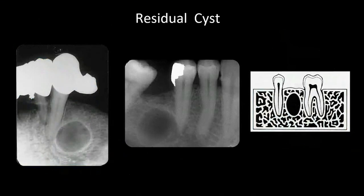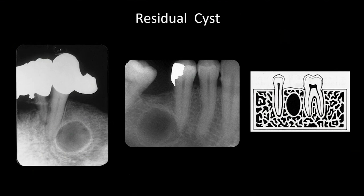Here's a beautiful example of a residual cyst. When a tooth is extracted but a radicular cyst is left behind, it's called a residual cyst. You can see it's very well-defined and corticated — a nice white line around it — indicating the body has been able to wall it off, with diseased tissue right next to healthy tissue. It's definitely hydrostatic in appearance.